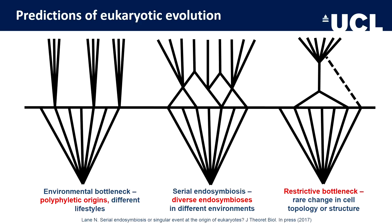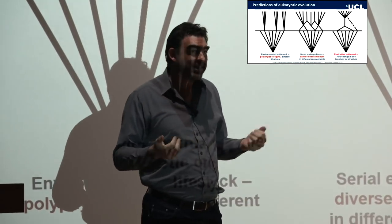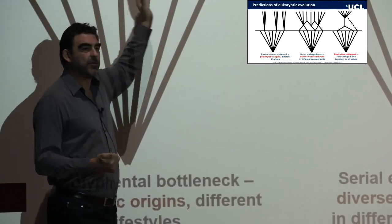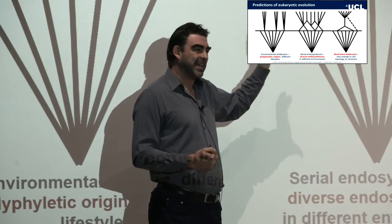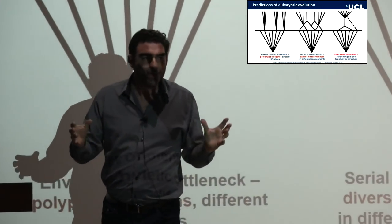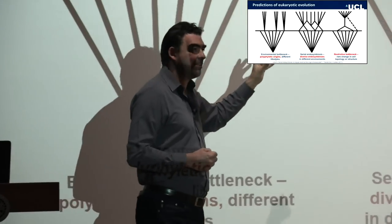If there was an environmental bottleneck, you might imagine cyanobacteria giving rise to eukaryotic algae, or osmotrophic bacteria giving rise to fungi, or predatory bacteria giving rise to phagocytes — polyphyletic origins of complex life. That's not what we see. We see a non-photosynthetic common ancestor of eukaryotes that later acquired chloroplasts. The serial endosymbiosis theory similarly predicted multiple endosymbioses giving rise to different types of complexity, also predicting polyphyletic origins — but again, that's not what we actually see.